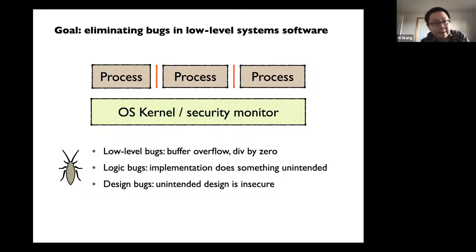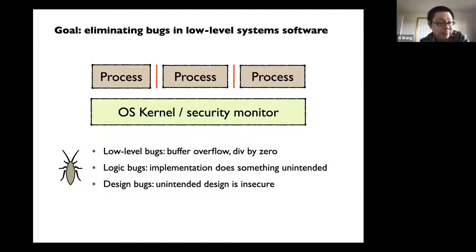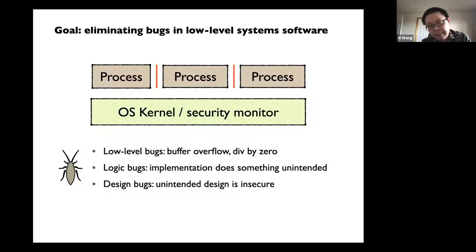Roughly speaking, you can imagine there are two to three types. One is, because we're programming low-level C code or assembly code, you will have low-level bugs like buffer overflows or division by zero. And once you get those out of the way, there could be some logical bugs — like you have something in mind that is correct, but your implementation is wrong. Maybe you missed some sanity checks, or maybe you didn't write the right checks at every single path.